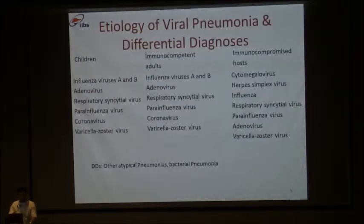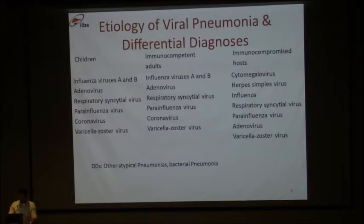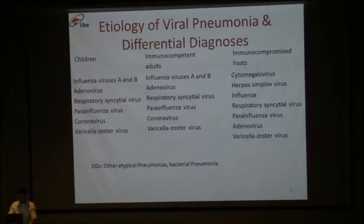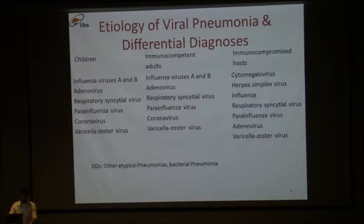Etiologies of viral pneumonia and differential diagnosis: in children, influenza viruses A and B, adenoviruses, respiratory syncytial viruses, para-influenza viruses, coronaviruses, and varicella-zoster viruses. A similar list applies to immunocompetent adults. In immunocompromised hosts, apart from normal pathogens, cytomegalovirus, herpes simplex viruses, and varicella-zoster viruses can cause pneumonia. The differential diagnosis includes other atypical pneumonias like fungal pneumonia, bacterial pneumonia, and eosinophilic pneumonias.